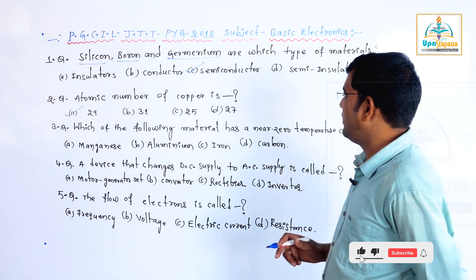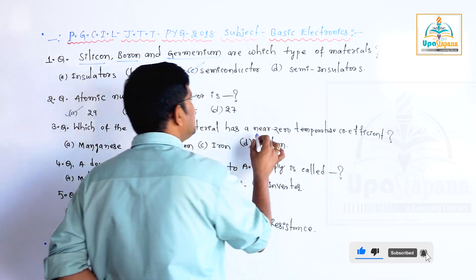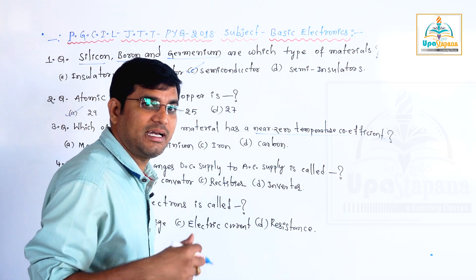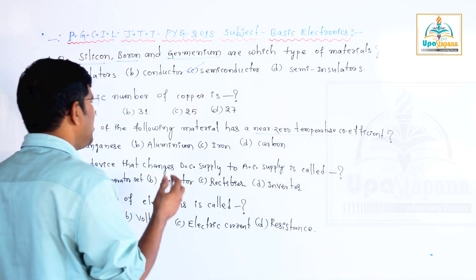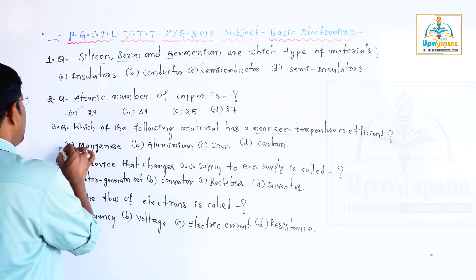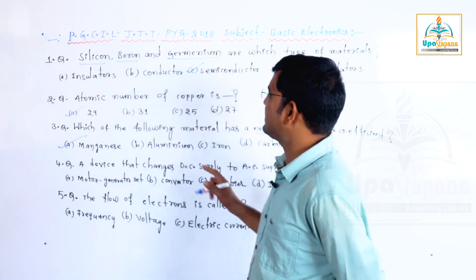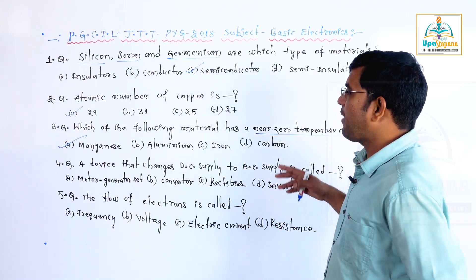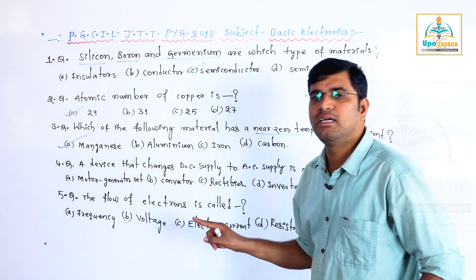Third question: which of the following materials has a near-zero temperature coefficient? Iron is positive, aluminum is positive, carbon is negative. So option A is matching — manganese. You have to eliminate the other materials. Manganese has a temperature coefficient of near zero.